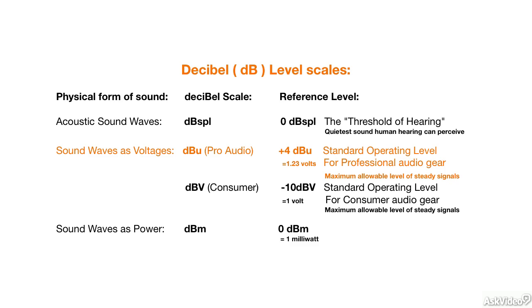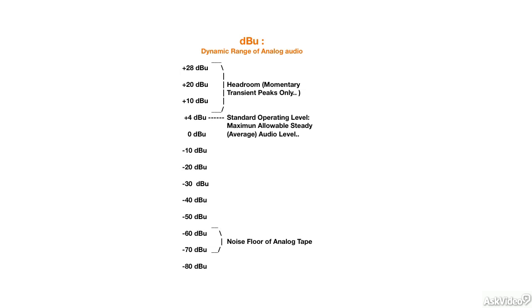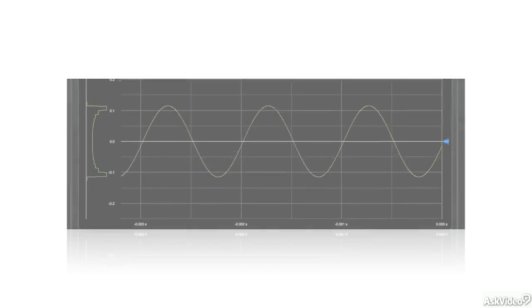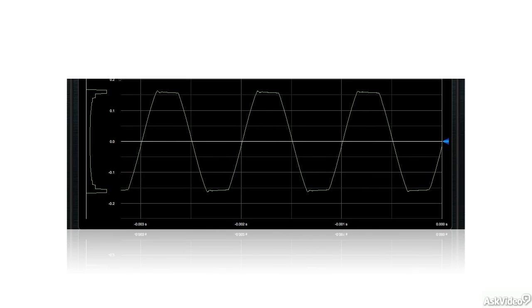Steady audio levels encountered in recording and mixing range from well below minus 60 dBU up to plus 4 dBU, and momentary transient peaks can go as much as 20 dB higher. This is the dynamic range of analog audio. If audio levels exceed the maximum level the equipment can handle, the shape of the wave is not preserved accurately—it's clipped or distorted.